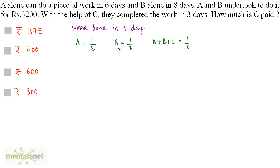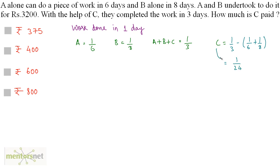Now we need the work done by C in 1 day. Work done by C in 1 day equals work done by all of them minus work done by A and B. So that is 1/3 minus (1/6 plus 1/8), which comes out to be 1/24. So work done by C in 1 day is 1/24.